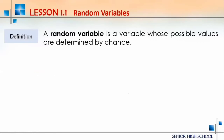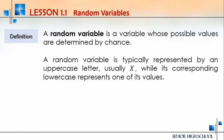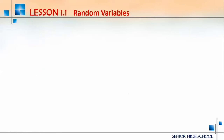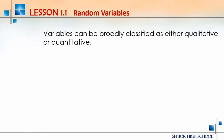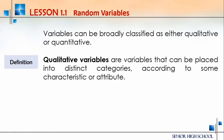A random variable is a variable whose possible values are determined by chance. It is typically represented by an uppercase letter, usually X, while the corresponding lowercase represents one of its values. Variables can be broadly classified as either qualitative or quantitative. Qualitative variables can be placed into distinct categories according to some characteristic or attribute — for example, male or female, or skin tone.